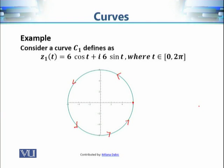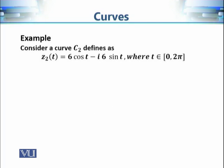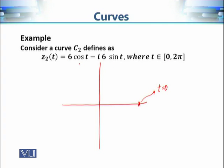Now let's consider another example C2: z2(t) = 6cos(t) − i·6sin(t), where t varies from 0 to 2π. At t = 0 we get 6. At t = π/2, cos(π/2) = 0 and sin(π/2) = 1, but the answer is −6i. At t = π we get another value.